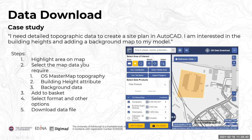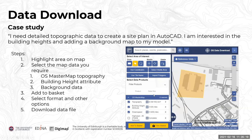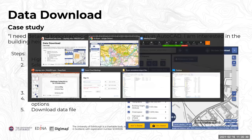In the data download demo, searching for Battersea and zooming into an area of significant current development. The maps shown don't reflect the data being downloaded — they simply help you locate the area. Selecting area of interest is the first step; you can draw a rectangle, polygon, use a buffer — for example, 150 metres around a certain point — select via coordinates, or select the entire visible area.